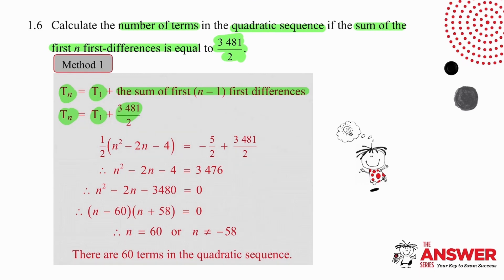So we simply set up an equation, put the equation into standard form, factorize if possible, otherwise use the quadratic formula. When we get our answers which are 60 or minus 58, we put a line through the minus 58 because we cannot accept a negative value. So we accept 60 only and we can state that there are 60 terms in the quadratic sequence because the n we are using is the position of the term that we are looking for.